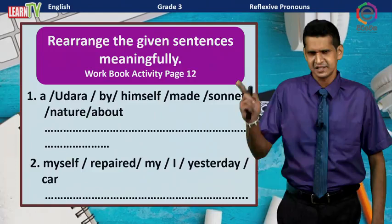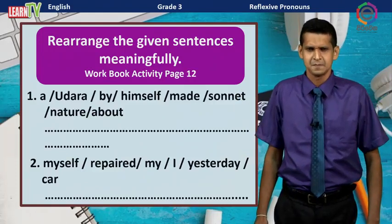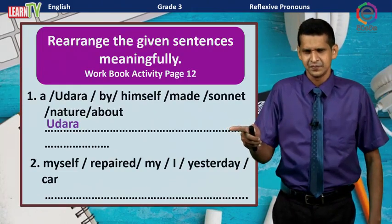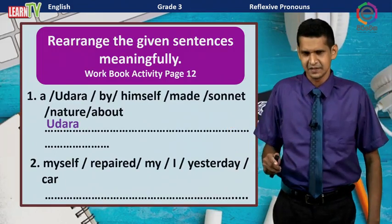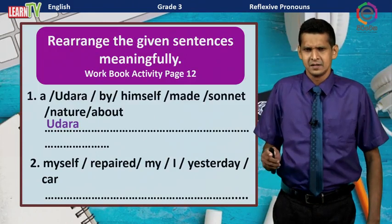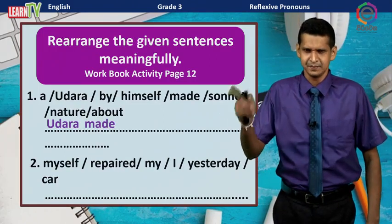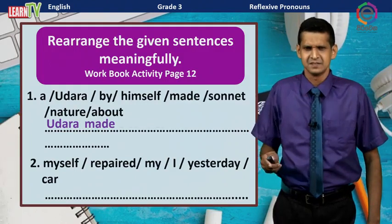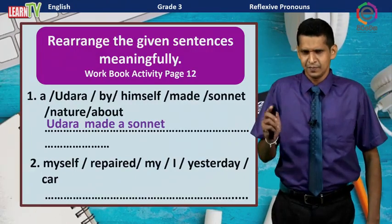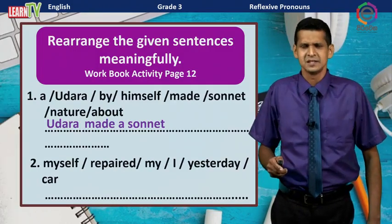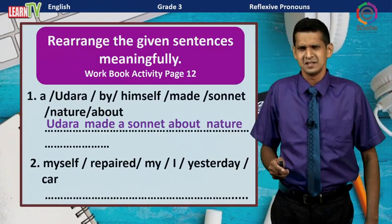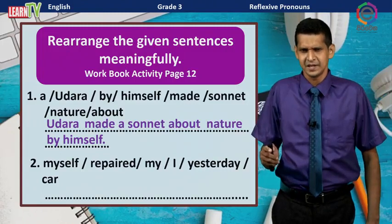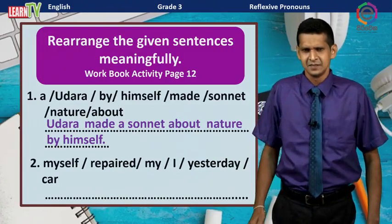The first one: First we find the subject — that is 'Udara.' Then the verb — 'made.' What did he make? A sonnet, which is a kind of poem. About nature. The sentence is: Udara made the sonnet about nature by himself. We can understand that he did it alone.